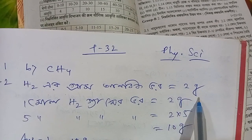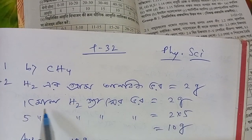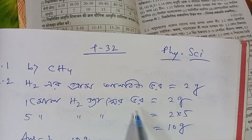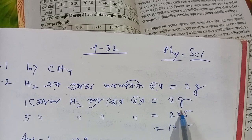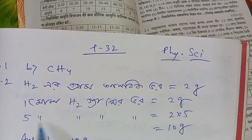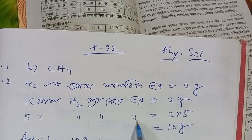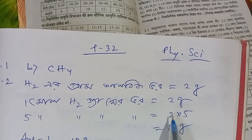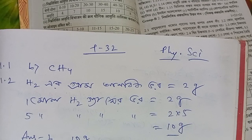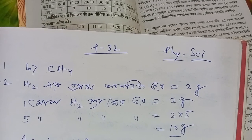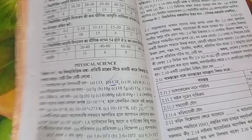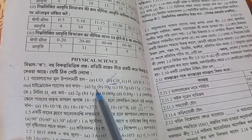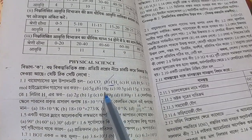Hydrogen is more than 2 grams. 1 mole hydrogen is more than 2 grams. 5 mole hydrogen is more than 2 grams. 10 grams.